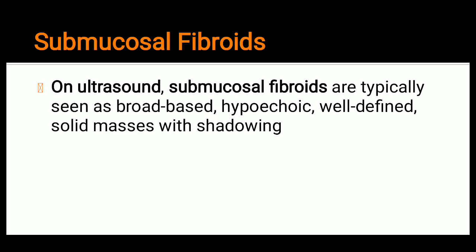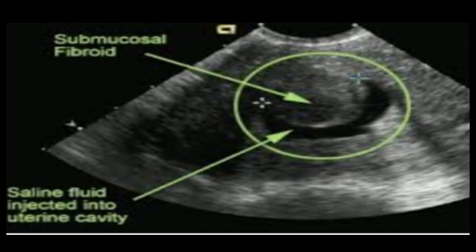Coming to submucosal fibroids: on ultrasound, submucosal fibroids are typically seen as broad-based, hypoechoic, well-defined solid masses with shadowing. With saline fluid injected into the uterine cavity, submucosal fibroids become apparent and you can see these hypoechoic, well-defined solid masses with shadowing.